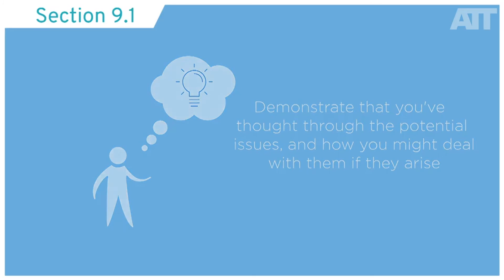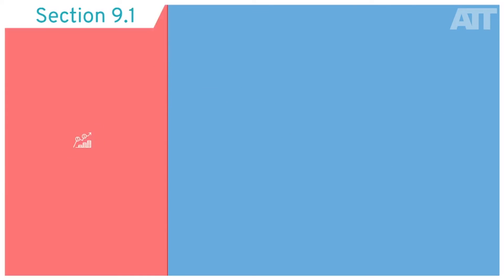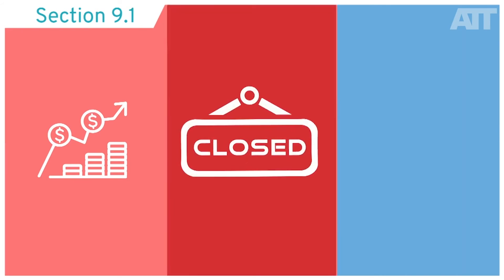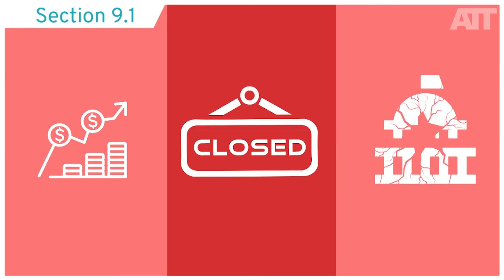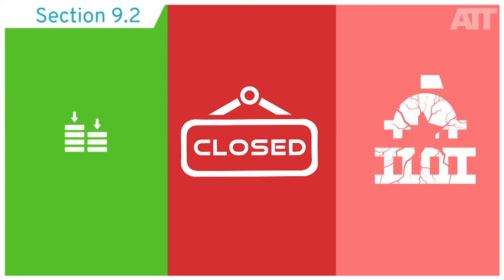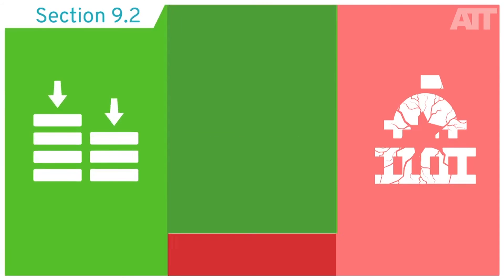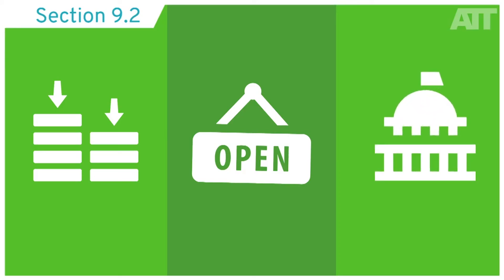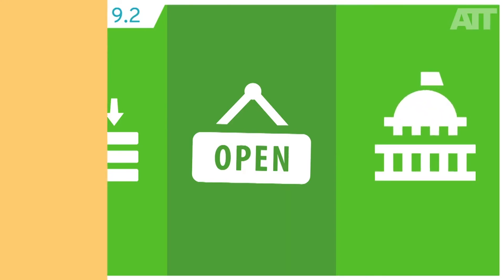Examples of risks that projects may face include that the cost may be higher than estimated, suppliers go out of business, or there's a change in government. In 9.2, we want to know what you will do to avoid or reduce the risks you have identified.